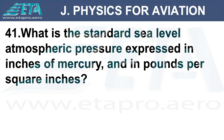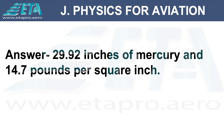What is the standard sea level atmospheric pressure expressed in inches of mercury and pounds per square inch? Answer: 29.92 inches of mercury and 14.7 pounds per square inch.